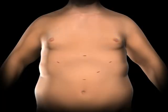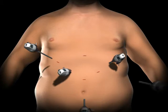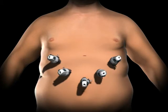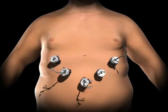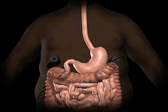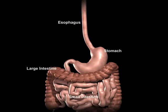To gain access to the abdominal cavity, small incisions are created on the abdomen. Trocars, which serve as passageways for the surgical instruments, are placed into the incisions. The surgeon examines the abdominal cavity using a laparoscope or video camera.